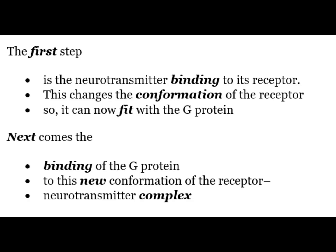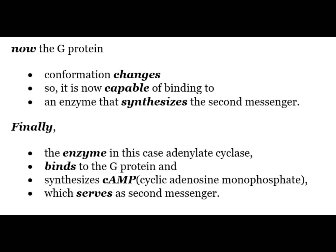The first step is the neurotransmitter binding to its receptor, which changes the conformation of the receptor so that it can now fit with the G protein. Next comes the binding of the G protein to this new conformation of the receptor-neurotransmitter complex. The G protein's conformation then changes so that it is capable of binding to an enzyme that synthesizes the second messenger. Finally, the enzyme — for example adenylate cyclase — binds to the G protein and synthesizes cyclic AMP, which serves as the second messenger.